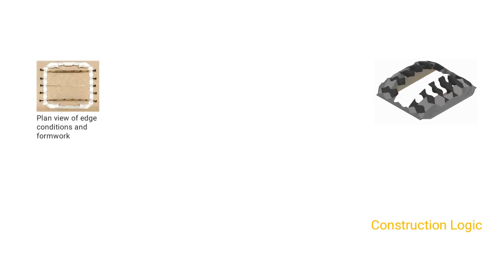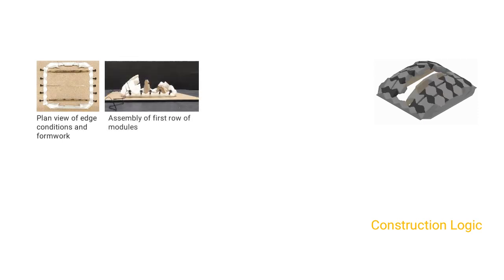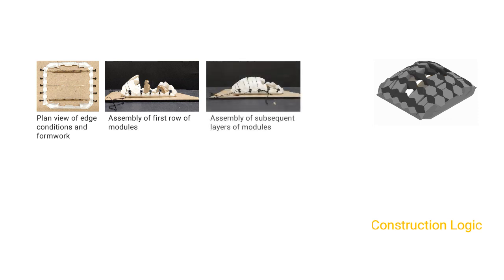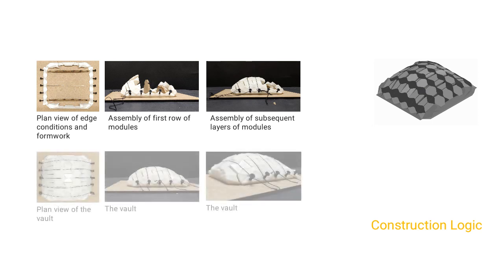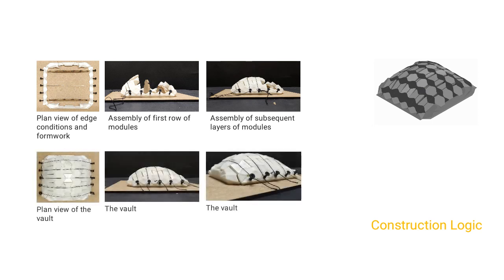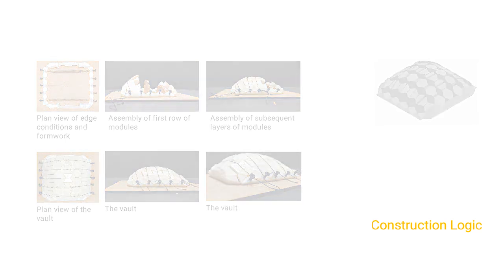For a symmetrical form with a square plan and four linear supports, assembly begins from the outer edge with two parallel supports. For the first arch, modules are staggered and scaffolding is required; the rest can be assembled without continuous scaffolding, with supports provided at strategic locations.